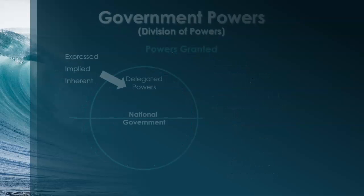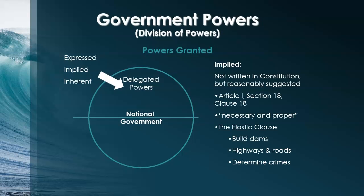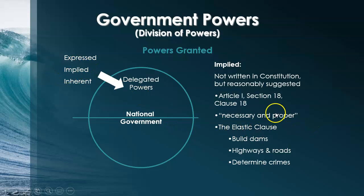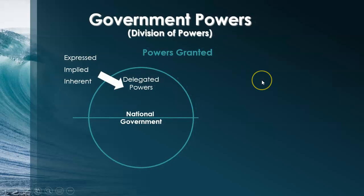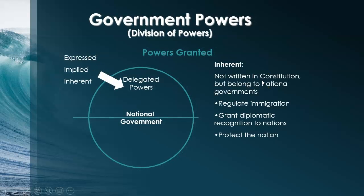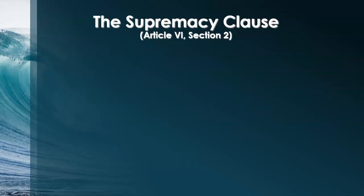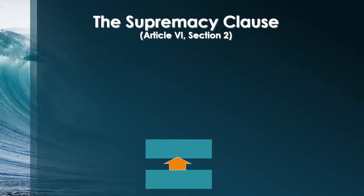I just went over those slides. The elastic clause — the Necessary and Proper Clause — is part of the implied powers, sometimes called the elastic clause. Those are the powers reasonably suggested and created to carry out the express powers. And the supremacy clause — we will stop here and pick up with that next week.